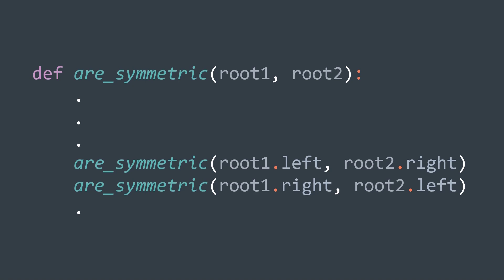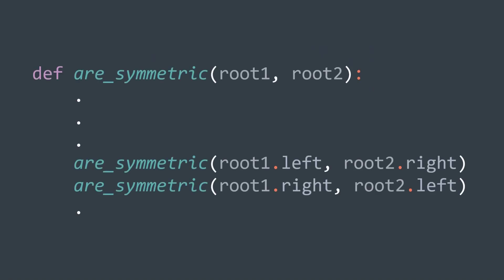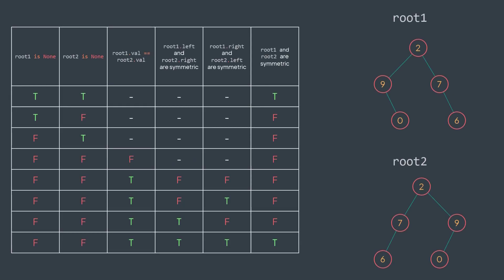If you're not familiar with recursion, you should really have a look at it. You can check the course I made on the subject — it's a complete course that will let you be comfortable with recursion. Going back to our problem: we call the function on root1.left and root2.right, we call it on root1.right and root2.left, and we check that both calls return true — meaning the left subtree of root1 is symmetric to the right subtree of root2, and vice versa.